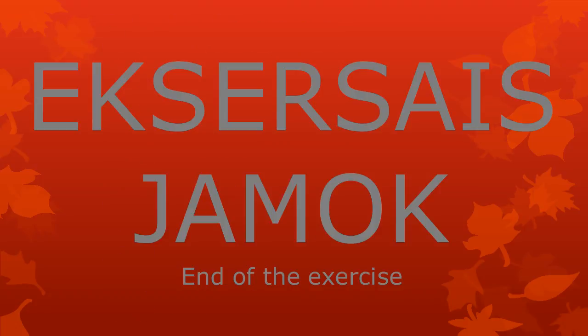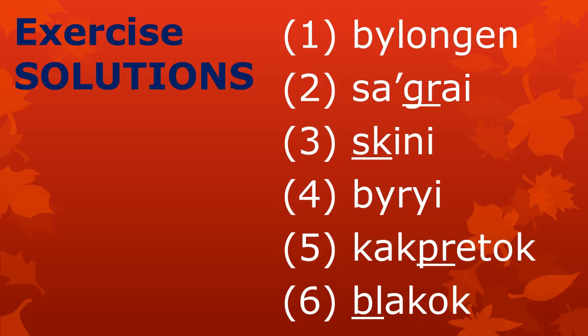Exercise tamo — let me give you the solutions. There was no cluster pronounced in one: Blongen. Words two and three were pronounced with a cluster: Sa'grai with cluster GR, and Skini with cluster SK. The word Beree was pronounced without a cluster. Five and six had clusters in the pronunciation: Kakpretok with cluster PR, and Blakok with the cluster BL.